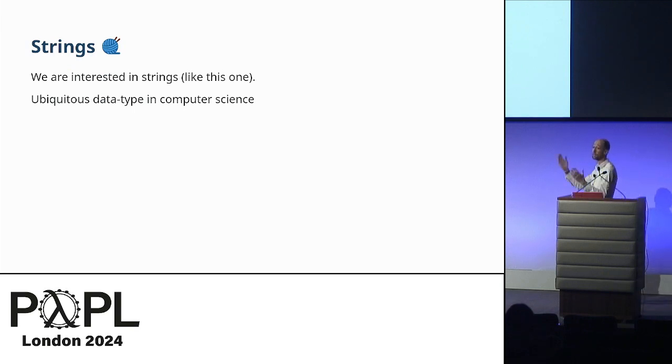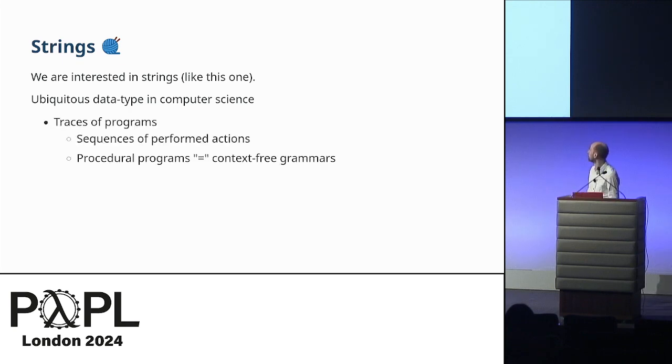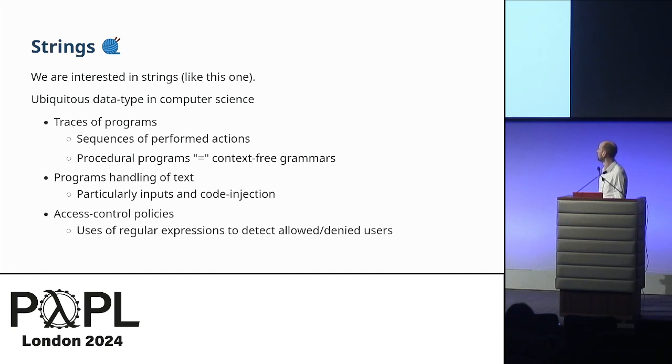So either you know the whole talk or the rest of the talk I'll go through what those things mean. We are interested in strings, like this one here. Obviously strings are a ubiquitous data type in computer science. One way that you might not think of straightaway is we can think of these strings as being a trace of a program. So when we are verifying programs, we're generating the strings that are generated by those programs.